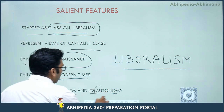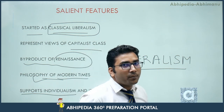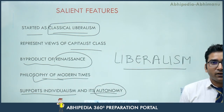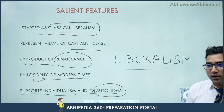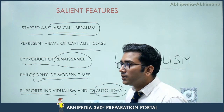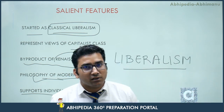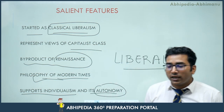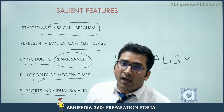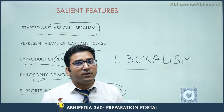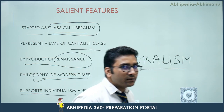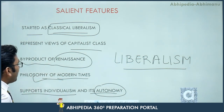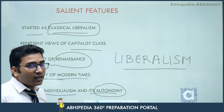Second, autonomy — which means the power to take our own decisions independently without someone's interference. For example, if I want to marry at a certain age, that would be my decision, not the decision of my fellows, of my societal beings, or of any other person associated with me directly or indirectly. So classical liberalism represented the views of the capitalist class.